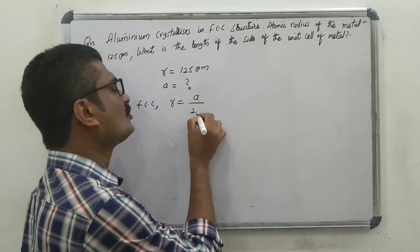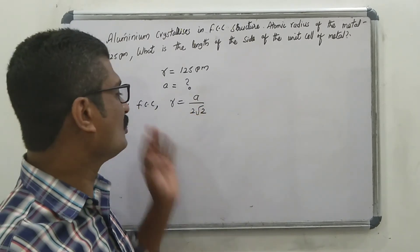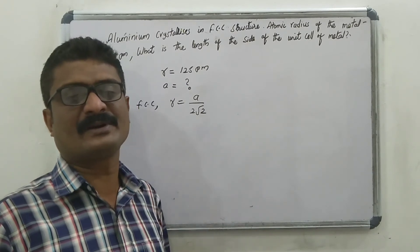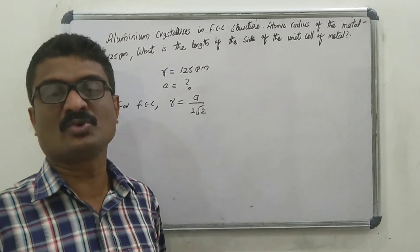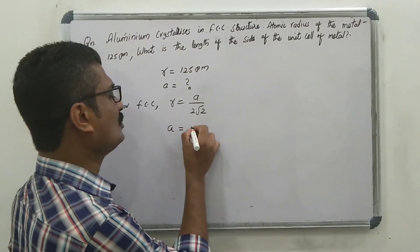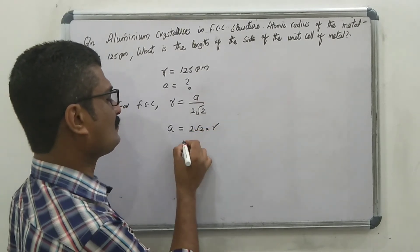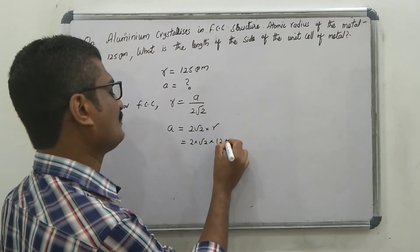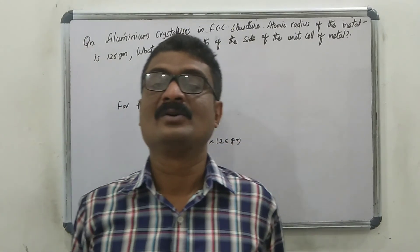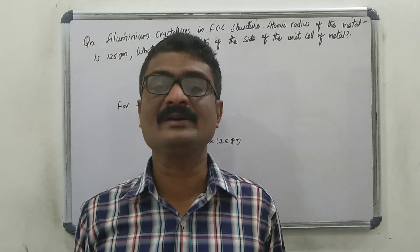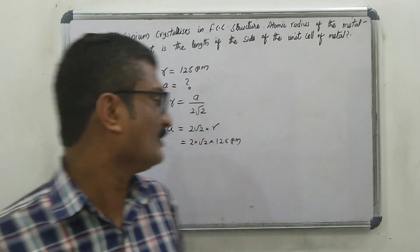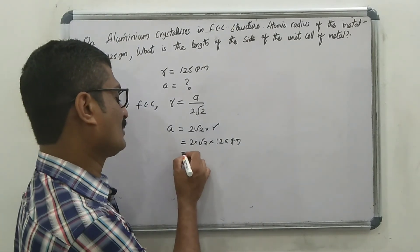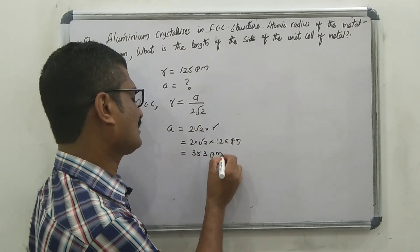For FCC structure, the radius R equals A divided by 2 root 2. So A equals 2 root 2 into R. Substituting: 2 into 1.414 into 125 picometer gives the answer 353 picometer.